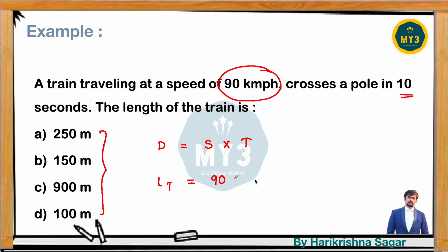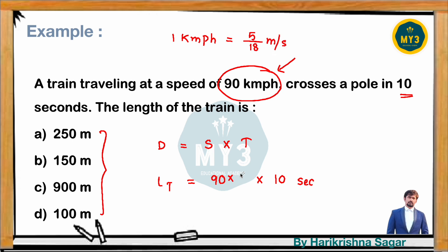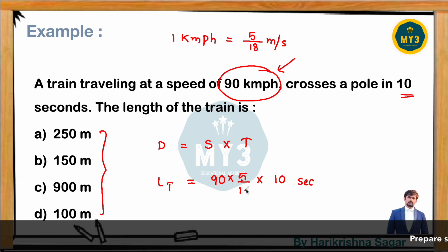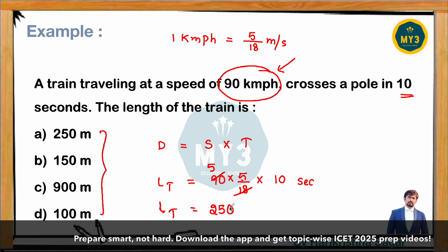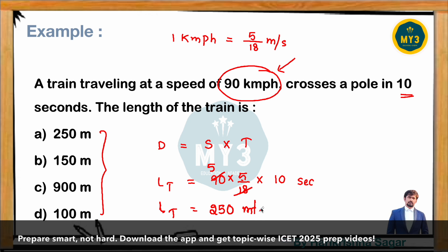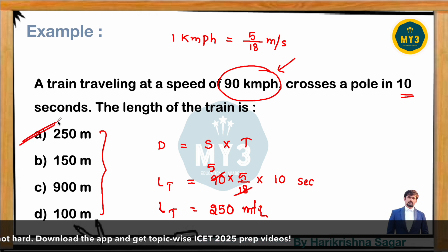Speed is given as 90 km/h and time is 10 seconds. Since options are in meters, convert 90 km/h to m/s using the relation: 1 km/h = 5/18 m/s. So 90 × 5/18 = 25 m/s. Then length of train = 25 × 10 = 250 meters. The answer is option A.